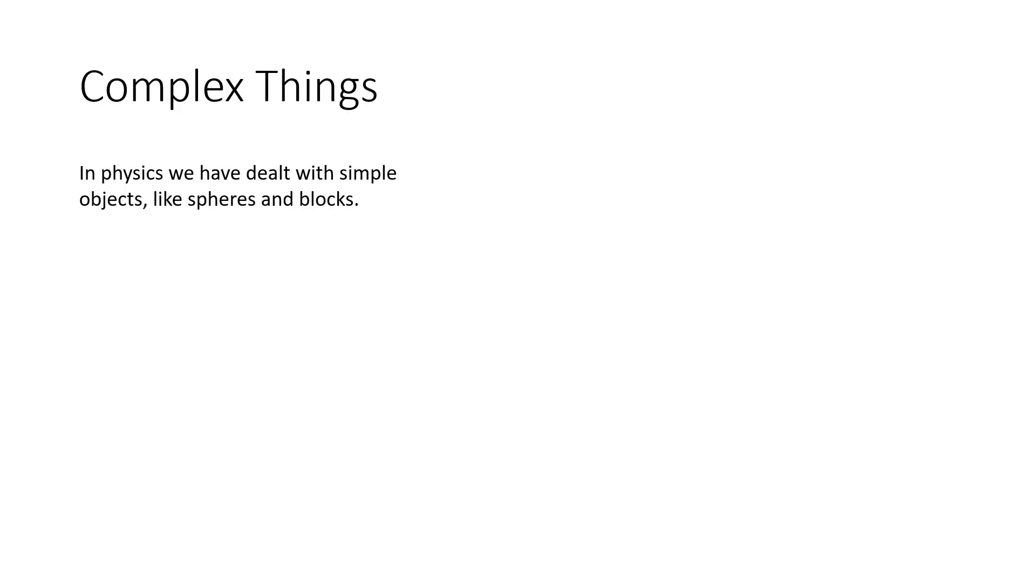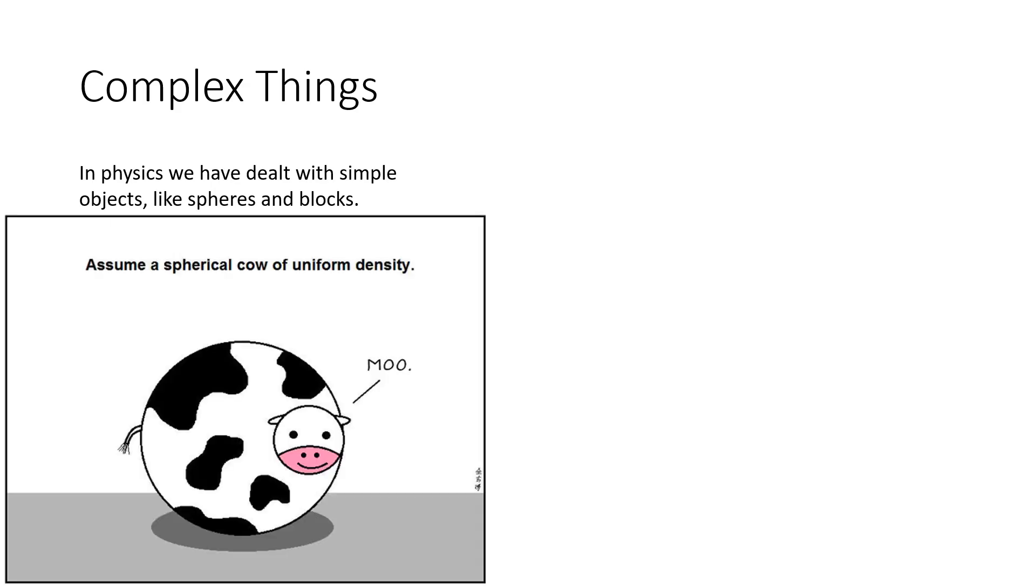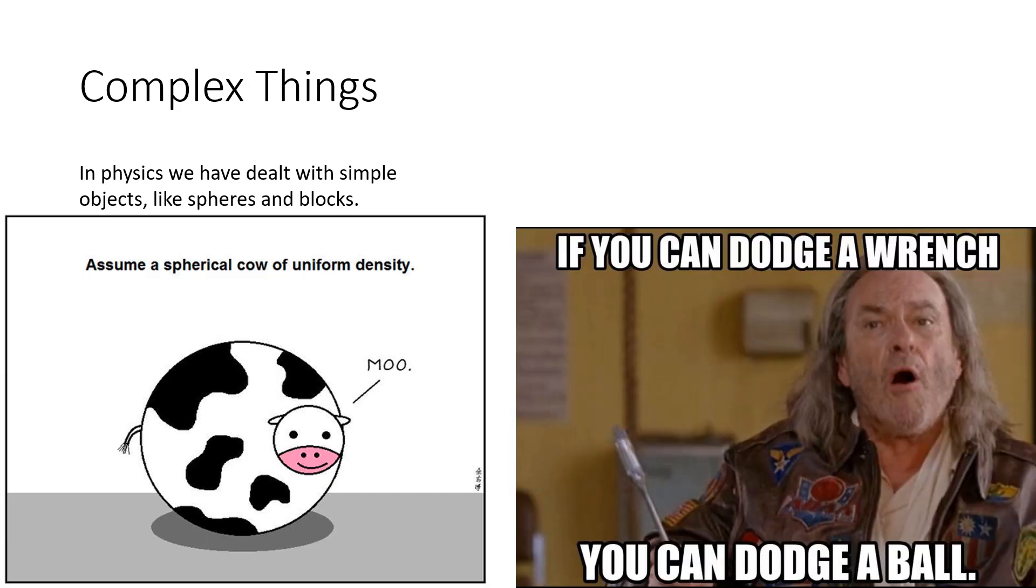Thus far in physics, we have dealt with simple things like spheres and blocks, squares and cubes, and that's how physicists prefer things. It's actually kind of a meme that if a physicist has a problem with a cow, they're going to start by assuming a spherical cow of uniform density in a vacuum. Try to reduce things to their most simplest basic form and start from there. It's kind of how physicists deal with things.